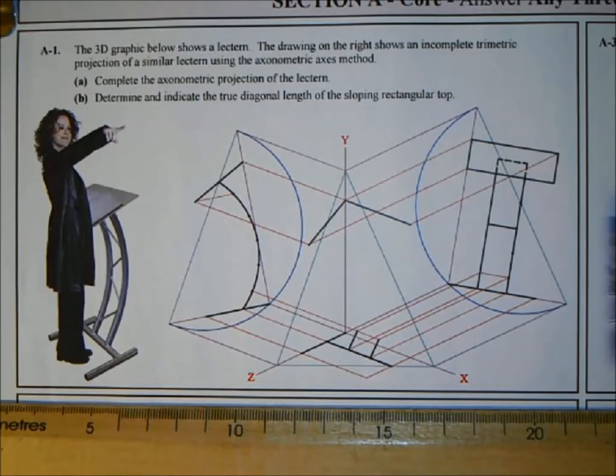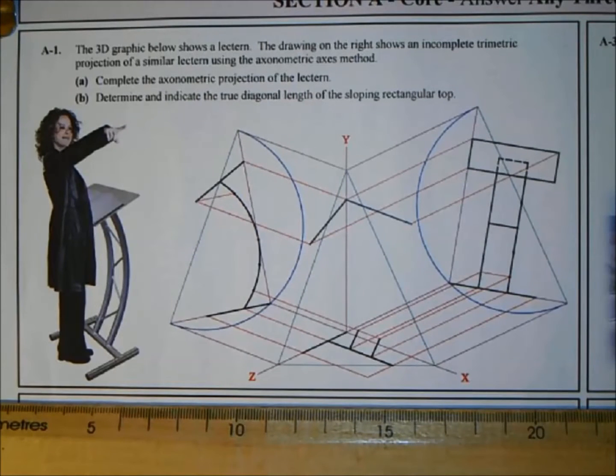Hi and welcome to another DCG tutorial. Today we're working on 2012 paper, Section A, question A1. Short questions, and this is an axonometric projection question.